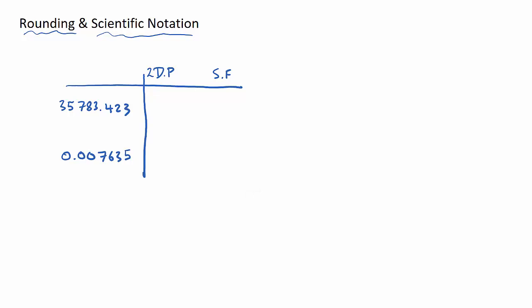Let's round our answers to two decimal places. The decimal places are after the decimal point, so we're interested in the first and second digits after the decimal. The question we need to ask is: does the number stay the same or does it round up? To answer that, we need to check the next number — is it between 0 and 4, or between 5 and 9?